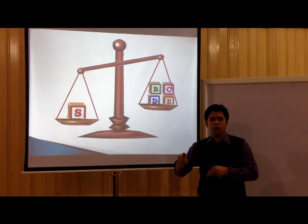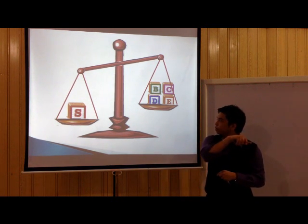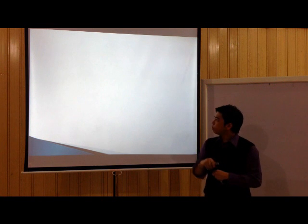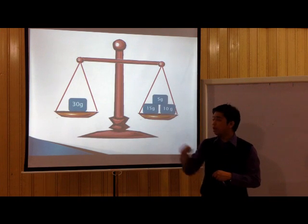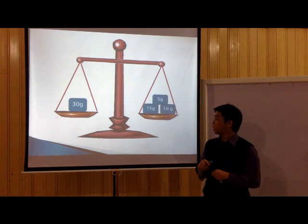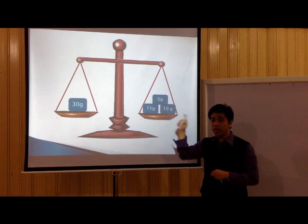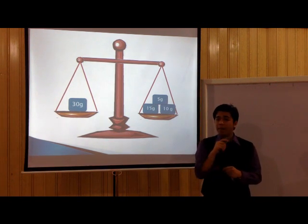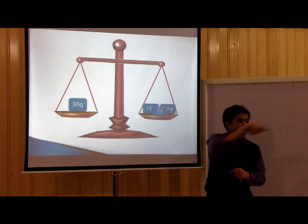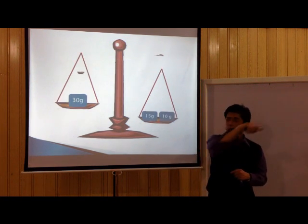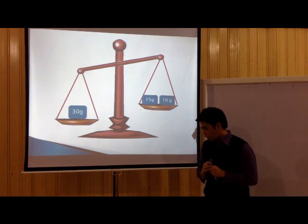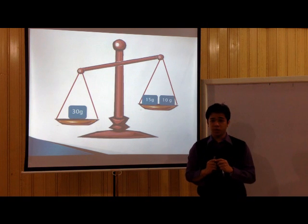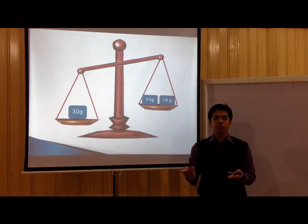Now, let's try to take a look at this one deeper. Again, a scale. On the left side of the scale, you have 30 grams. On the right side of the scale, you have 5 grams, 10 grams, and 15 grams. What happens if I take away one of the nodes on the right side of the scale? Of course, it will not be balanced anymore. Same thing with being successful as a student — you have to have that balance. You have to balance everything for you to become successful.